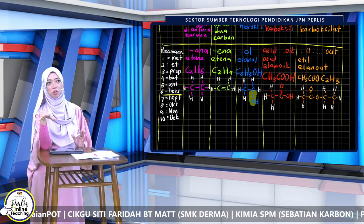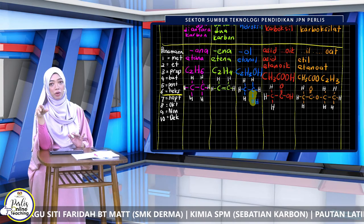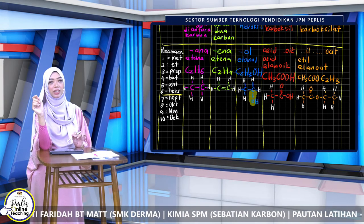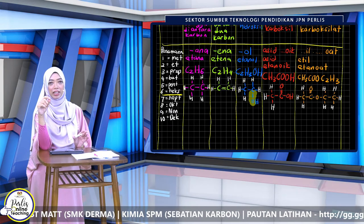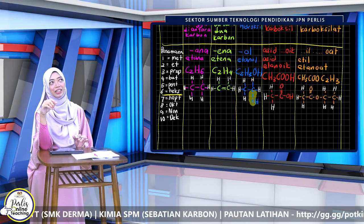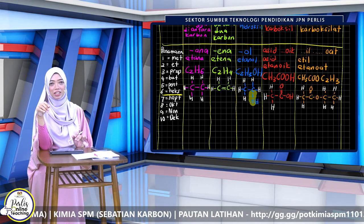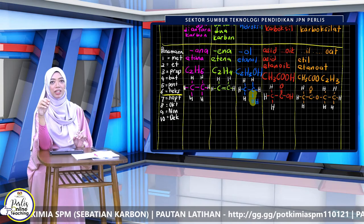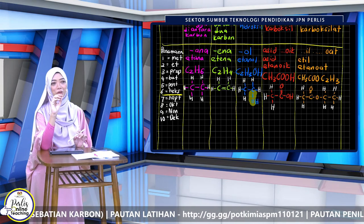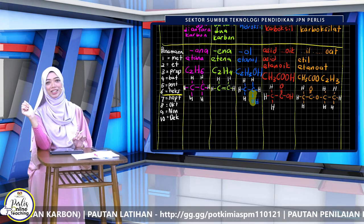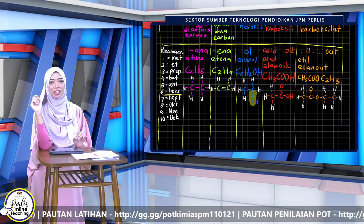Akhiran ester: alkohol jadi '-il', contohnya etanol jadi etil. Kalau asid karboksilik dia asid etanoic, dia akan bertukar jadi etanoat. Jadi nama ester kita: etil etanoat. Kemudian, Cikgu ada ajar cara melukis formula struktur bagi setiap nama-nama tadi.